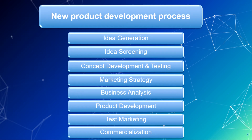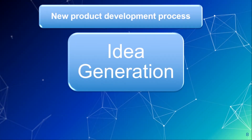Next, we look at the new product development process. It comes from idea generation, idea screening, concept development and testing, marketing strategy, business analysis, product development, test marketing, and commercialization. Starting with idea generation — when you are starting a new product, thousands of ideas need to be collected, either internally from within the organization or externally from customers and end users.